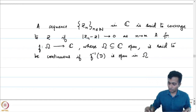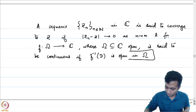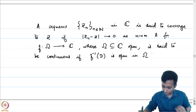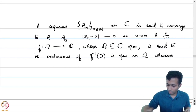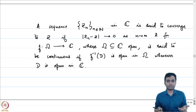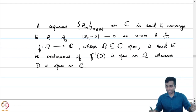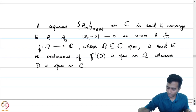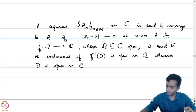Continuity can be defined as: f inverse of D is open in omega whenever D is open in C. This is the same as saying that if there is a sequence z_n in omega which converges to z in omega, then f(z_n) converges to f(z). These are the usual notions which you are familiar with.